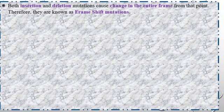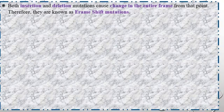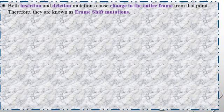Both insertion and deletion mutations cause a change in the entire reading frame from that point. They are therefore known as frameshift mutations. The entire protein sequence of amino acids is altered from the point of insertion or deletion.